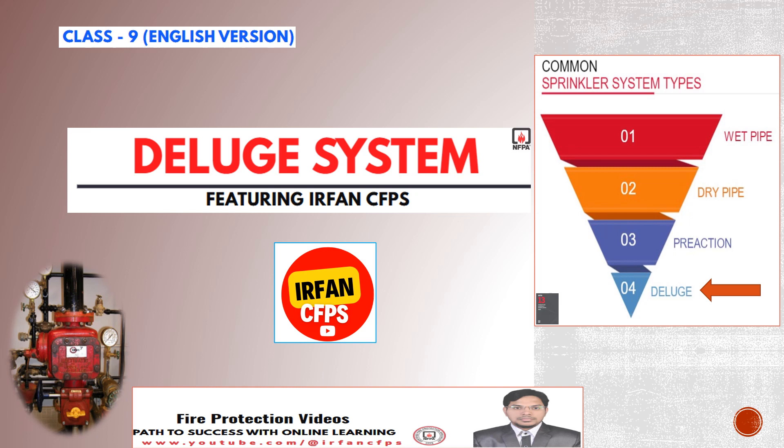In our previous classes, we learned about various types of sprinkler systems, and they are wet system, dry system, and pre-action systems.